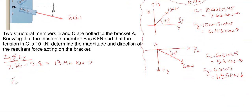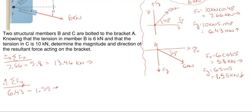Let's repeat the process for the y direction, taking up as positive and everything downward as a negative number. Our first component, 6.43, is acting upward so it is positive 6.43 kilonewtons. Then we have 1.55 acting downward, so that is minus 1.55. So 6.43 minus 1.55 gives me 4.88 kilonewtons, which came out to be positive, so I know it is going upward.